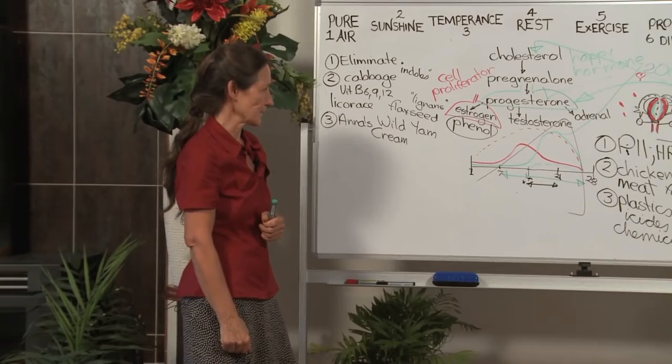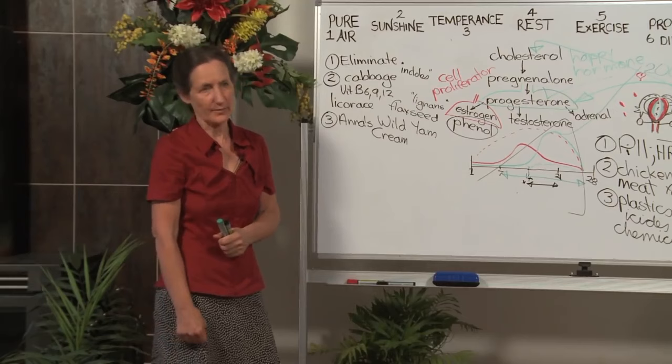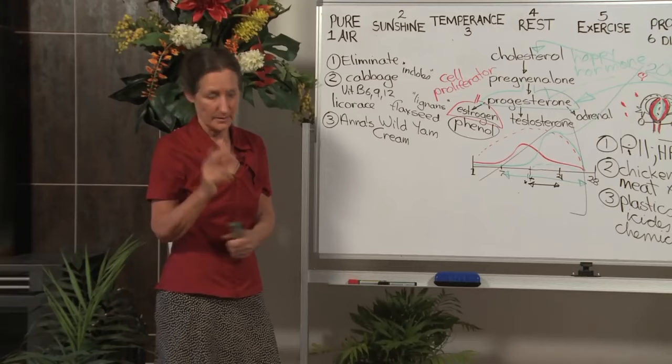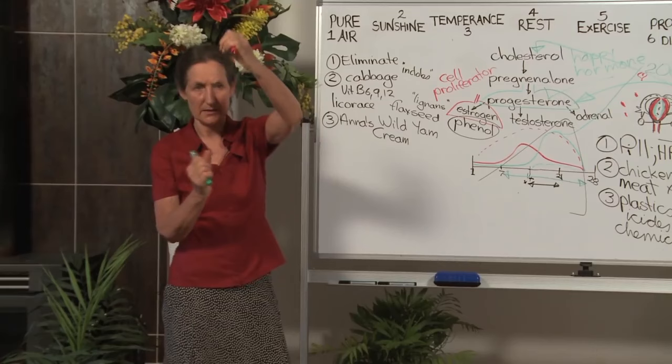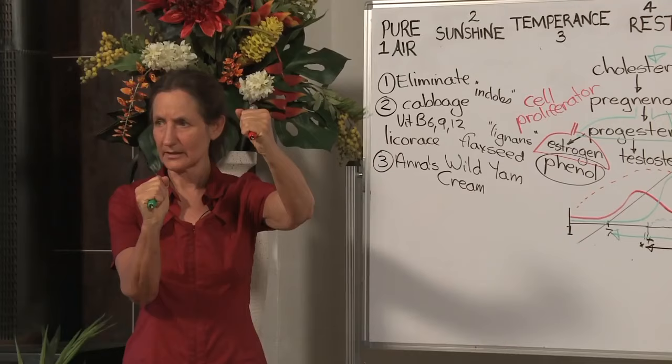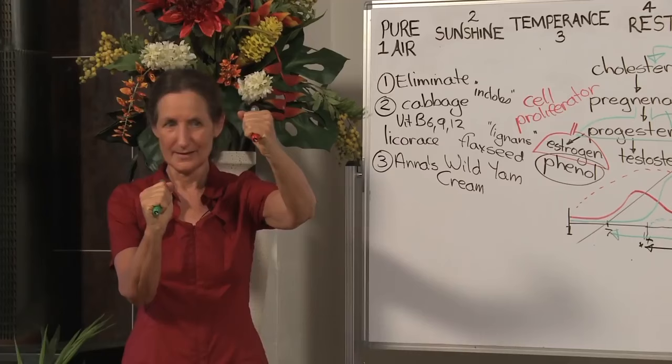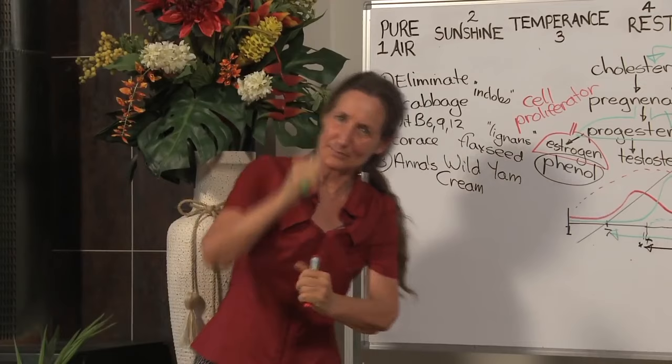One lady said to me, I tried the Anna's Wild Yam Cream and it didn't work. I said, how long were you on it for? She said two months. Let me show you what's happening after two months. Remember, the imbalance is like this. After two months, it's probably like that. That's why it's important to be on it for at least a year, so we can get that balance around to where it should be.